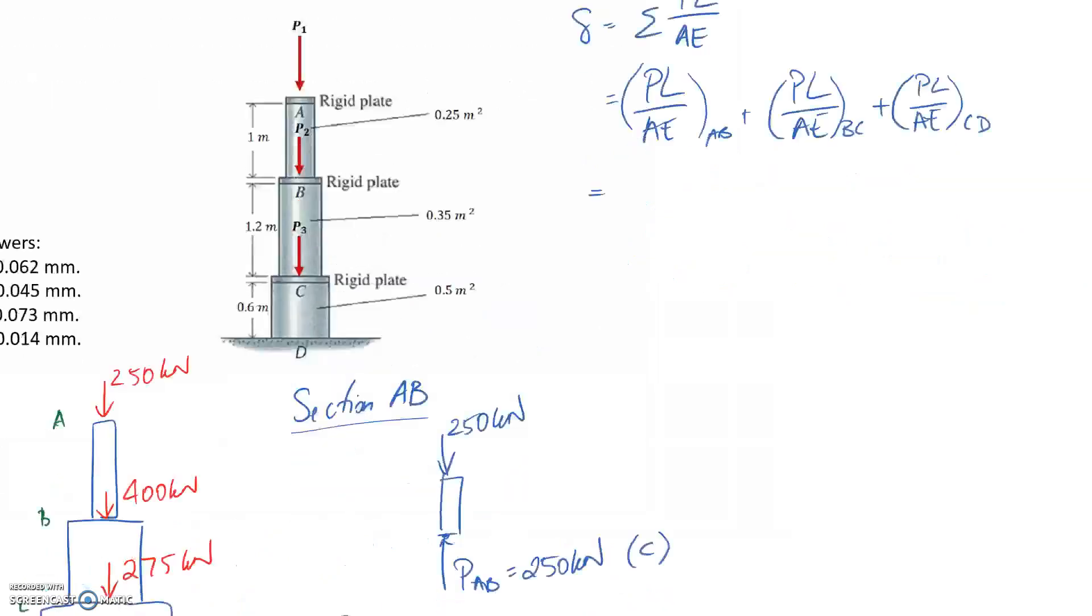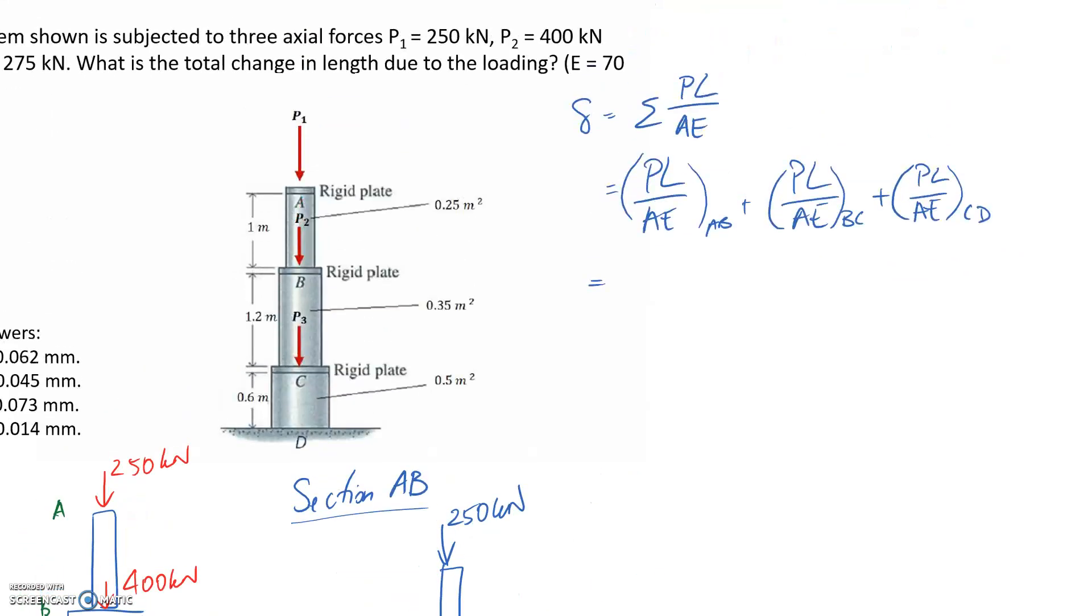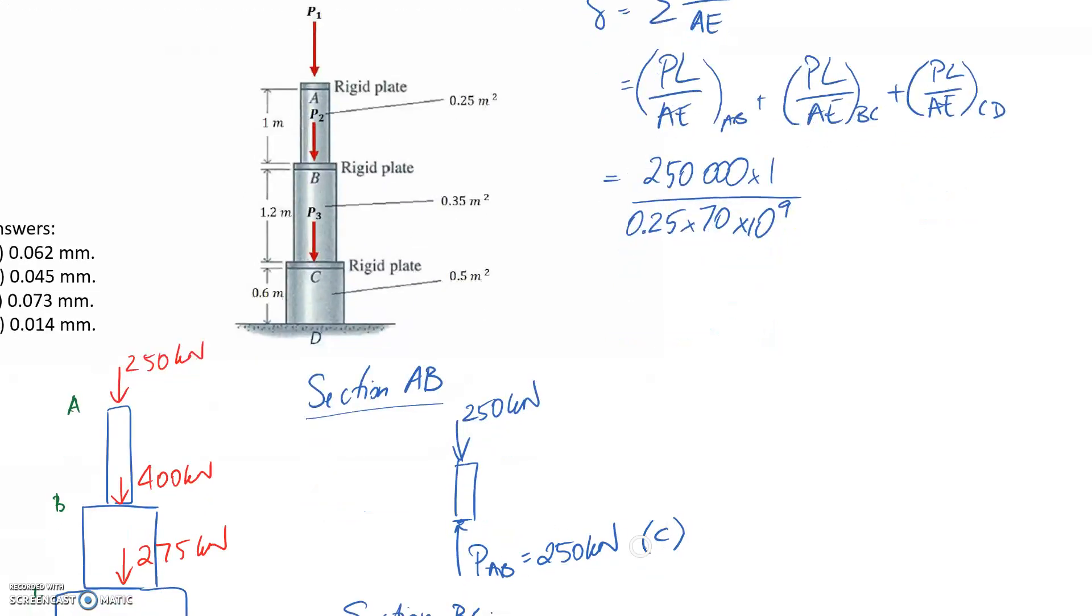Starting with section AB, we said it was 250 kilonewtons. I'm going to convert everything back to base units so the axial deformation comes out in meters. This is 250 kilonewtons, times 1000 to put it into newtons. The length of section AB is 1 meter. The cross-sectional area is 0.25 meters squared. Young's modulus is giga which is 10 to the 9. The other thing to think about is whether this is positive or negative. It was compression so we're going to treat that as negative because it's getting shorter in length.